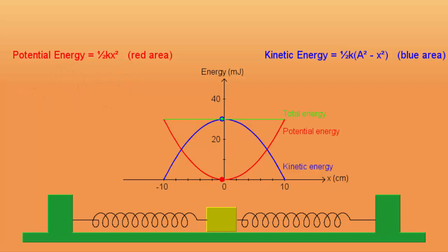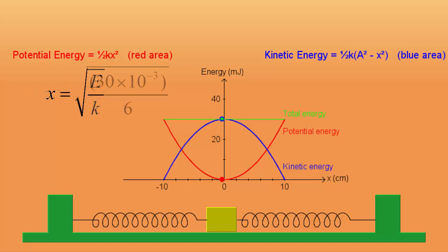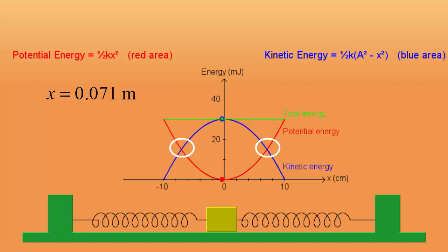Finally, what is the displacement when the kinetic energy is equal to the potential energy? The only time where kinetic energy and potential energy are the same is when both are equal to exactly half of the total energy. Since it is the potential energy that is dependent on position, we can use it to determine the position where the potential energy is half of the total energy. Rearranging to solve for x gives a position of 0.071 m. Note that this occurs twice in each cycle of the oscillation, at 0.071 m on either side of equilibrium.